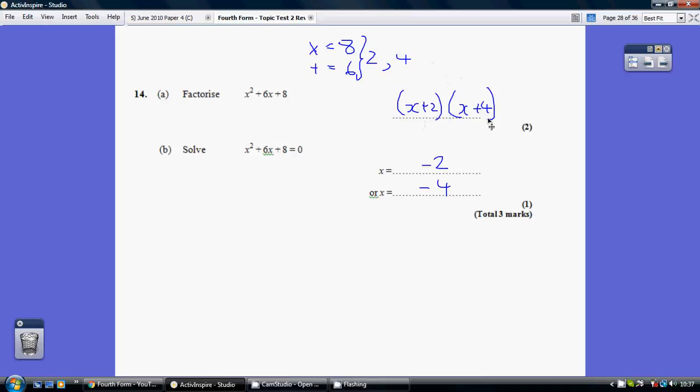You could have written x plus 4, x plus 2, that's fine. And remember, you can check your answer. If you were to multiply out these brackets, you would get back to where you started. Now having factorized this,